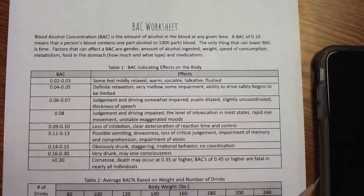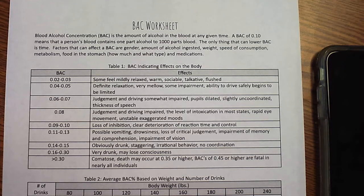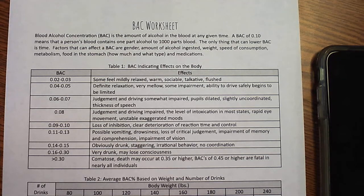To determine BAC, there are lots of different ways we can do it and lots of different calculations out there. The idea is that there are a lot of variables that go into understanding BAC. Gender is probably one of the biggest. Also, how big the person is, how much they weigh, how much time they actually consumed the alcohol, and then the actual percent of the alcohol — meaning a beer would be a little bit different than a glass of wine or a drink with liquor in it.